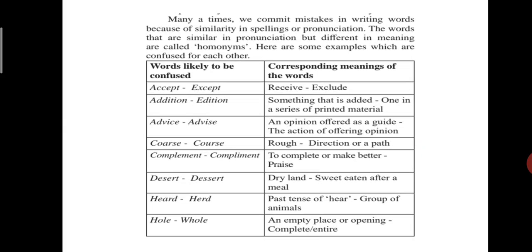Here are some examples which are confused for each other. See the examples. Words likely to be confused and corresponding meaning of the words. Accept, accept that is first meaning Accept, receive. Accept means exclude. Addition, edition. Some addition, something that is added. And edition, one is one in a series of printed material.